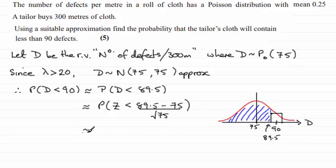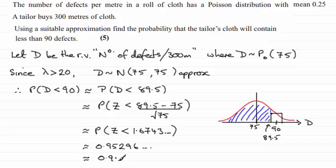And if you work out this value in here, it turns out to be the probability of z being less than 1.6743 and so on. And if you were to use a calculator or look up in tables this value here, you'd find that you get 0.95296 and so on, which when rounded then comes to 0.953 to three significant figures. So the probability then of the number of defects being less than 90 is going to be approximately 0.953.